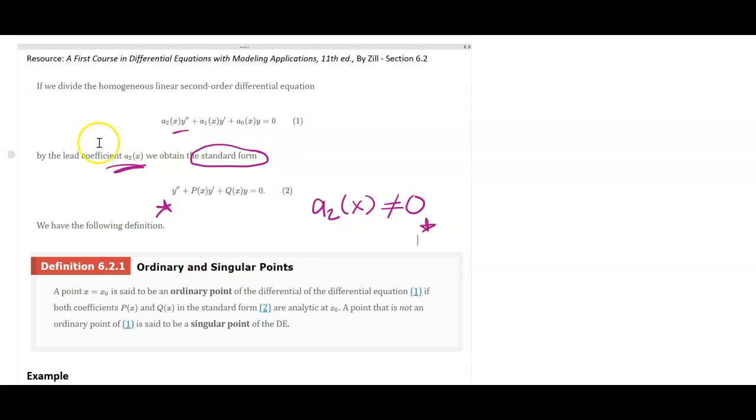So a point X is said to be an ordinary point as long as when we have this standard form, these two functions are analytic, where analytic means a power series exists.